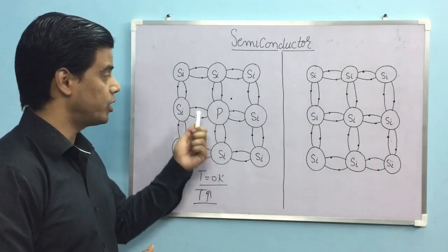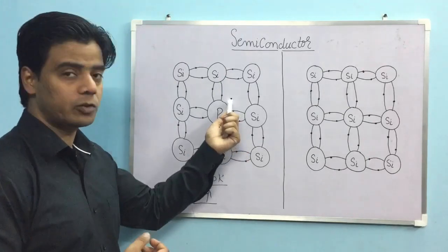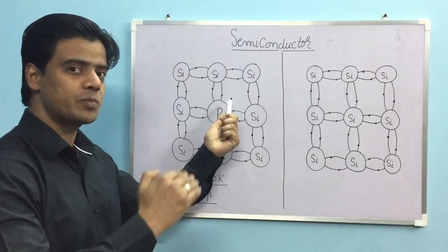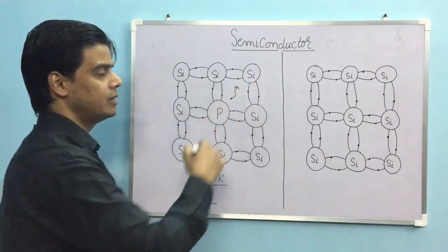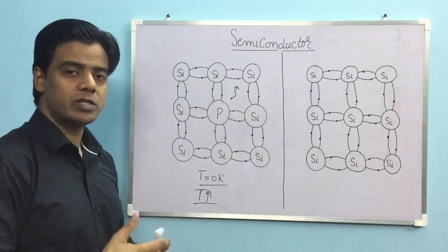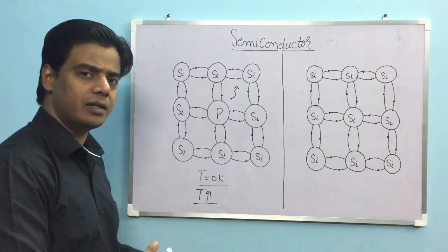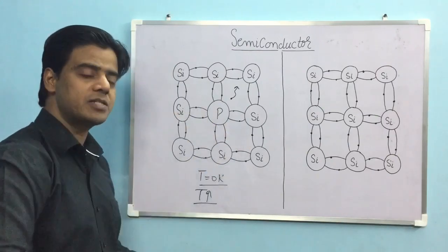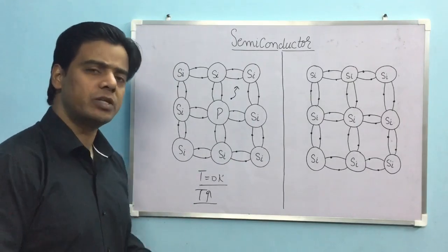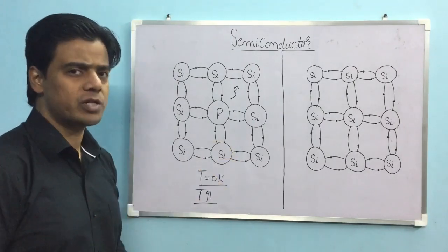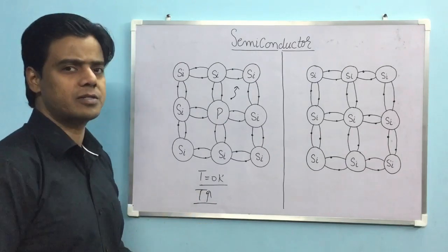Because this electron has more energy, this electron, which is only in orbit, will go out. And this electron, which will go out, will be able to conduct electricity.